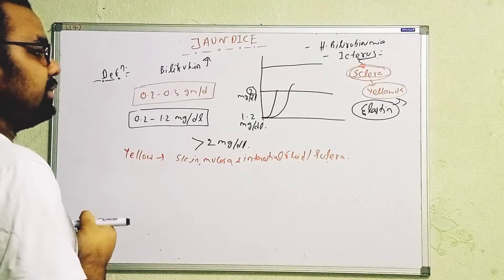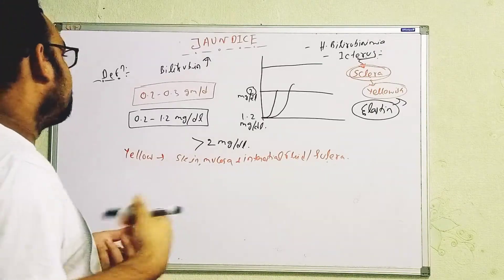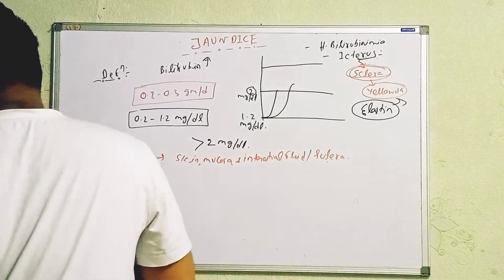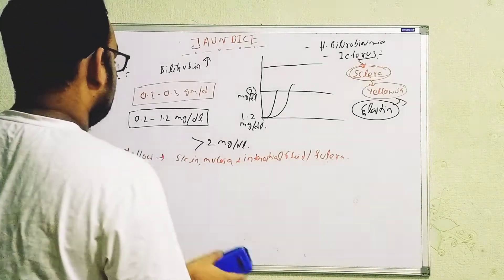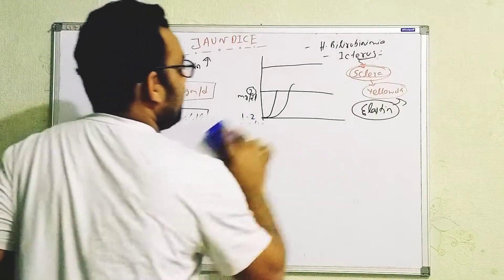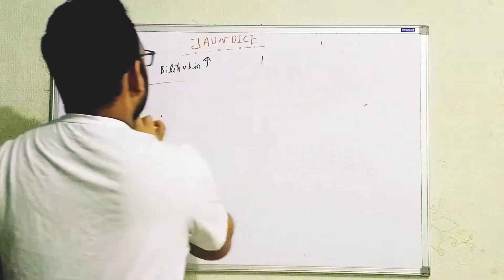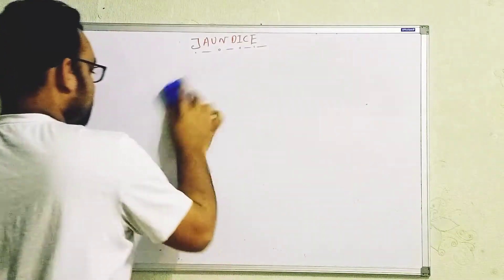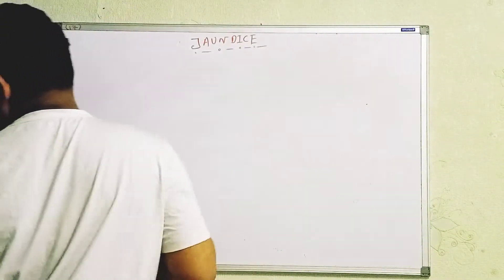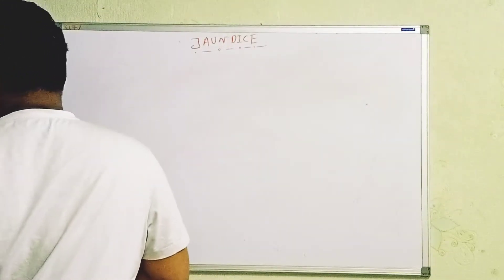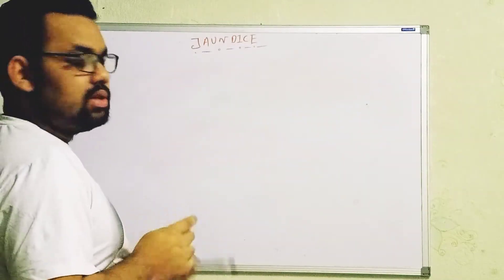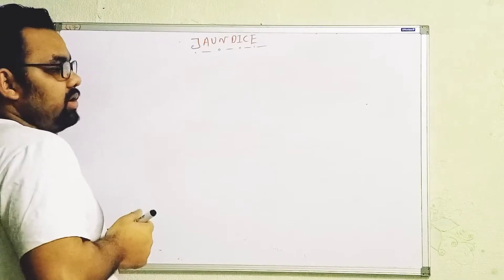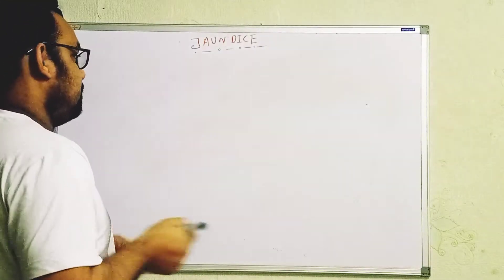Now I'll talk about how bilirubin is produced. I'll first cover normal physiology and then go to pathophysiology. Whenever the bilirubin level elevates to more than 2 mg/dL, we will see symptoms — yellow color of the skin, yellow coloration in the mucosa, interstitial fluid, and in the sclera, which is also called icterus.